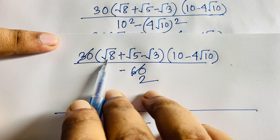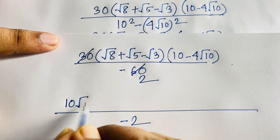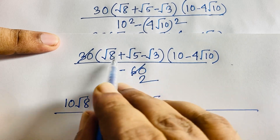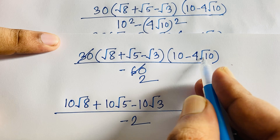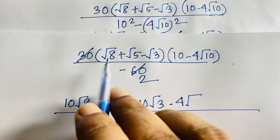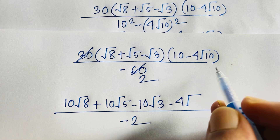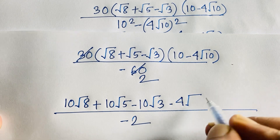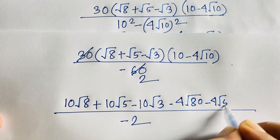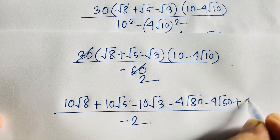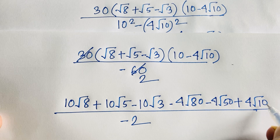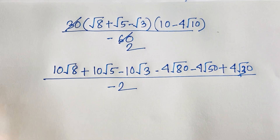Expanding the numerator: 10 times √8 plus 10 times √5 minus 10 times √3, then minus 4√(8×10) which is −4√80, minus 4√50 becomes negative, and plus 4√(10×3) which is 4√30.